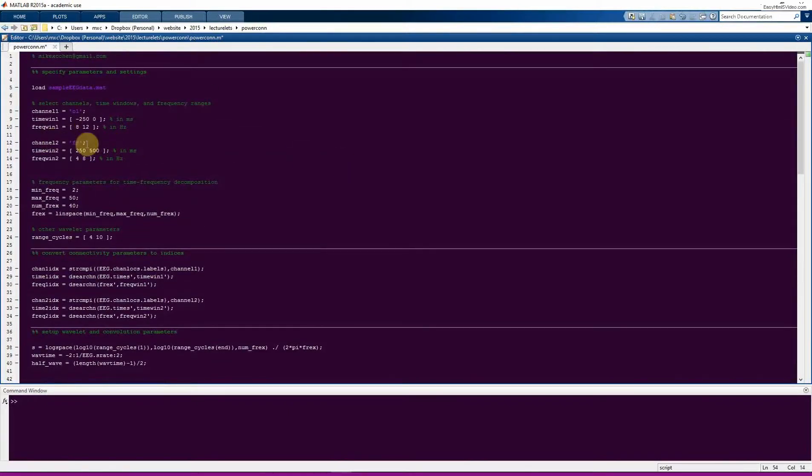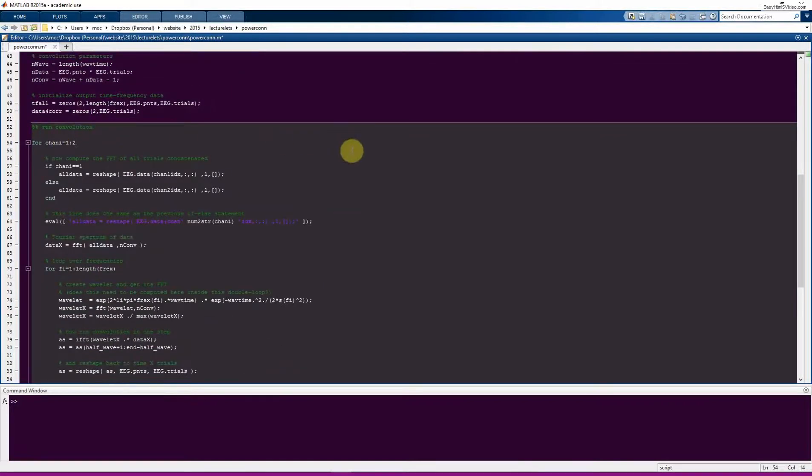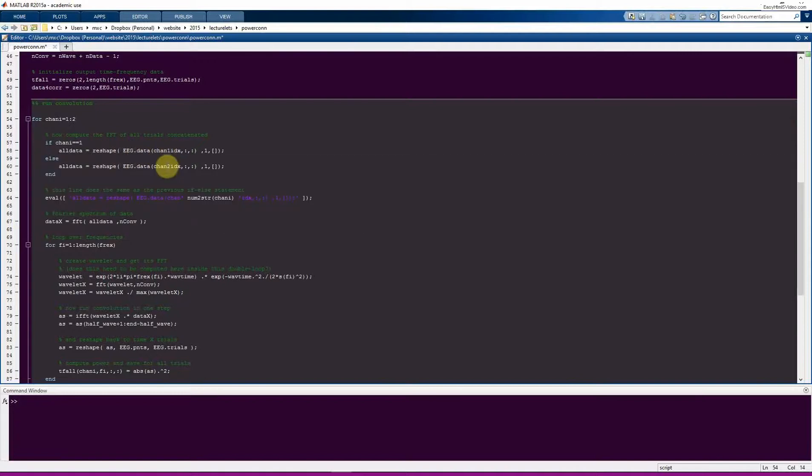Here's where we run the convolution. Now here we're only doing two channels because I set up this analysis specifically to compute connectivity between two electrodes. So we only need to run two channels. Here we get all the data from these two channels depending on whether we're in the first or the second element of this loop. Here I wanted to show you a MATLAB function called eval. And what this function will do is basically evaluate the code in here. So you can see a lot of this looks really similar to this. The main thing that I've changed is this. So here you see this is hard-coded to be one or two. And here that number is missing. So it goes chan and then idx over here. And then I have the chan number, which is going to be one or two. So this line of code does the same thing as these lines of code.